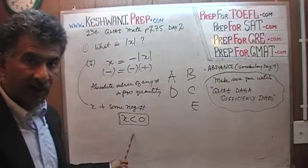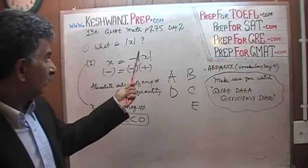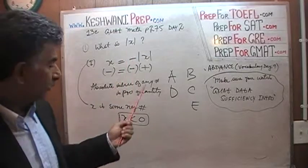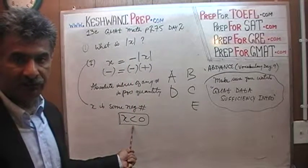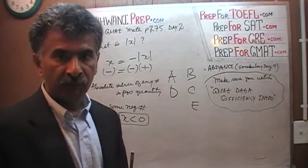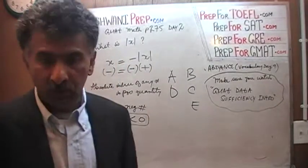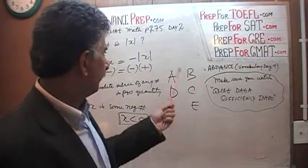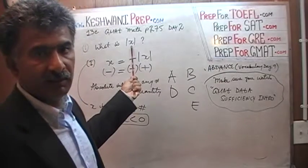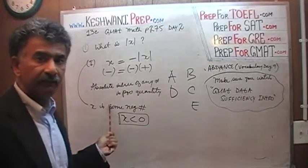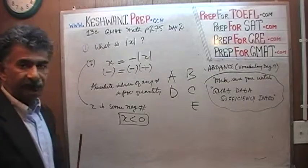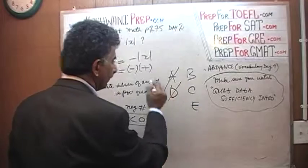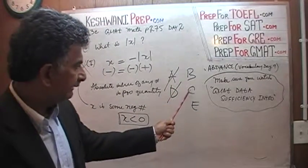Is that enough to answer the question being asked? The question is: what is the absolute value of X? Well, if you ask me what the absolute value of X is and then tell me X is something less than 0 — how do I know? I need to know exactly what X is before we can answer the question. The first statement by itself is not enough. That means we can cross out A and we can cross out D. The answer has got to be either B, C, or E.